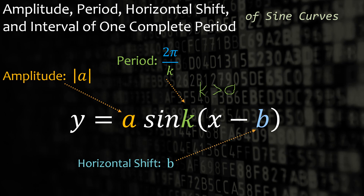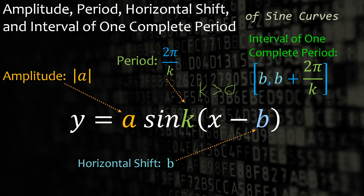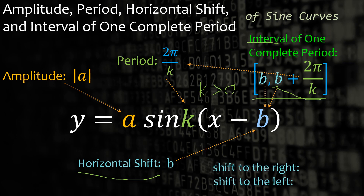The horizontal shift is represented by b, and the interval of one complete period is from b to b plus 2 pi over k. When we say complete period or interval, it is on this interval where the entire period of any function in this form will happen. The horizontal shift refers to whether the graph is shifting to the left or to the right. The graph will shift to the right when b is greater than zero, and when b is less than zero, the graph is shifted to the left.